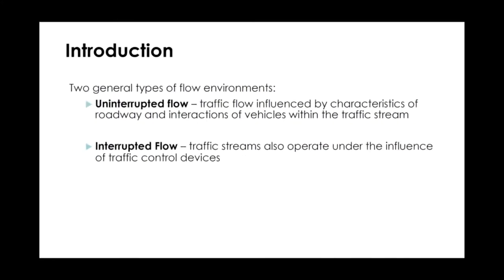When talking about traffic flow, we have two types of flow environments. The first is uninterrupted flow, where traffic is influenced only by roadway characteristics and vehicle interactions within the traffic stream — not affected by any traffic control device. Examples of uninterrupted flow are highways, expressways, and freeways without traffic signals, where vehicles can keep driving as long as traffic allows.